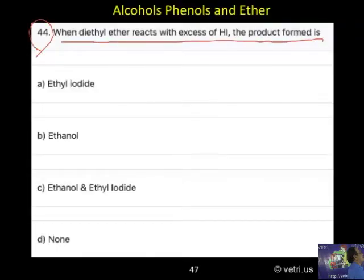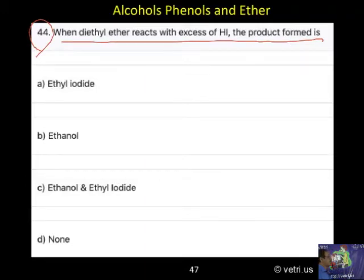Question 44: When diethyl ether reacts with excess of HI, the products formed are: ethyl iodide, ethanol, ethanol and ethyl iodide, or none of the above.